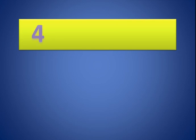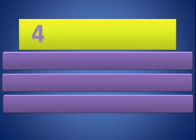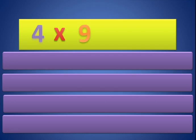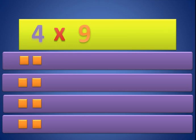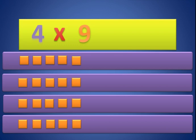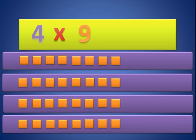Now 4 times 9. We need 4 groups — 1, 2, 3, and 4. That means we need 9 for each group — 1, 2, 3, 4, 5, 6, 7, 8, and 9. So 4 times 9 equals 36.